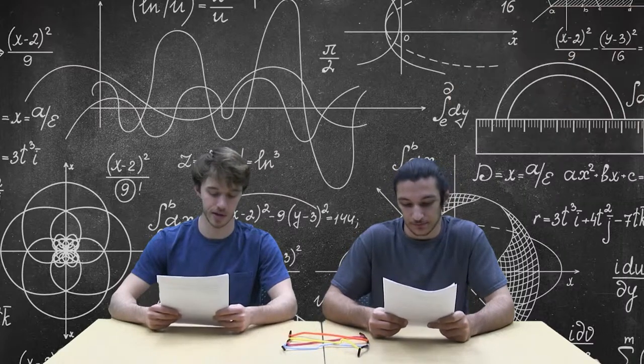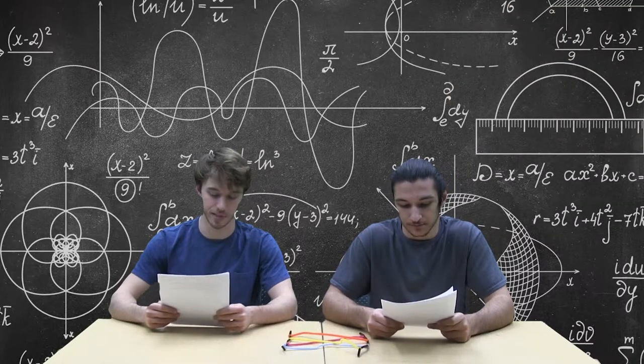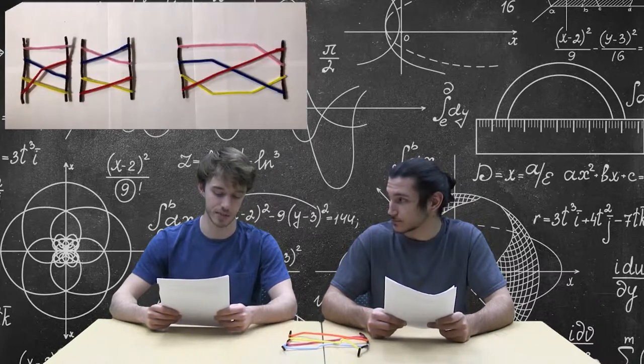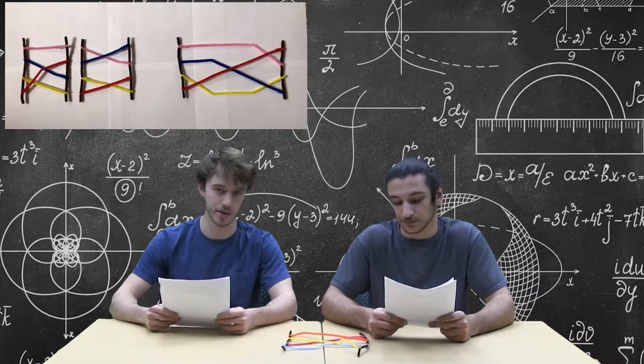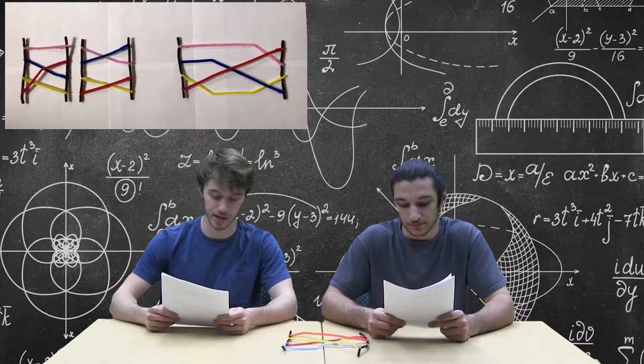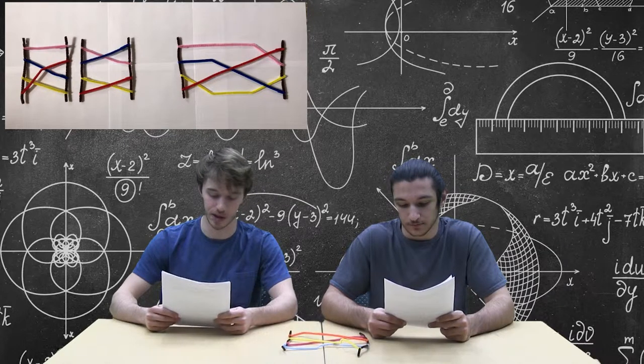The first thing that we can note about braids is that we can compose them. When we compose two braids, we simply attach one braid to the end of the other. The strands and colors from the first braid carries through the second, following along a new path presented.